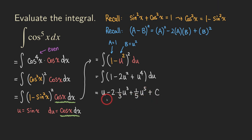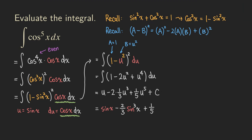But we are not completely finished because our original function is in terms of x. We need to replace all the u's with sine x to get an expression in terms of x. So finally, we have the answer: sine x minus two-thirds sine cubed x plus one-fifth sine to the fifth x, plus C. And then we're finished with the problem.